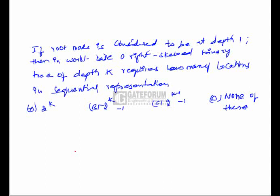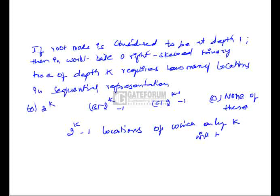It is given that the root node is present at depth 1 and we have to find the number of locations required for sequential representation of a right-skewed binary tree of depth k. In the ideal case, a complete binary tree representation doesn't waste any space, but in the worst case, a skew tree of level k will require 2^k minus 1 locations, of which only k locations will be occupied.